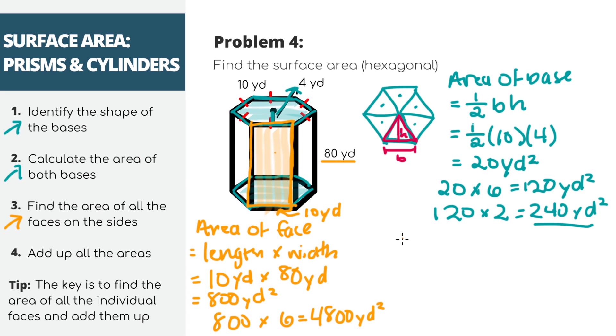In our final step of this problem, and the final step in this video, let's add up the areas of the bases and faces. 240 plus 4,800 is 5,040 yards squared, which is our final answer.